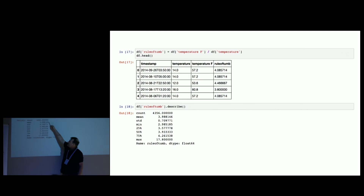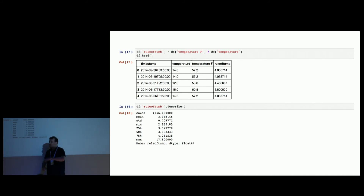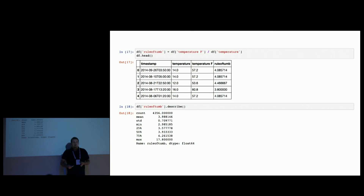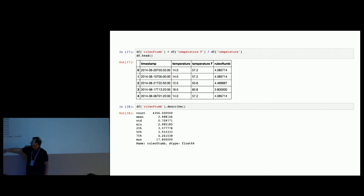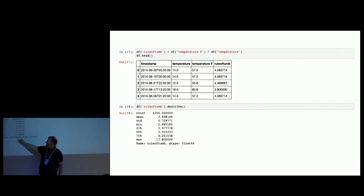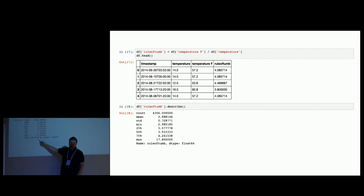To get a statistical impression of how good our rule of thumb might be, we can use the describe method, which is also built in. Just take the series and call describe. We get the count, mean, standard deviation — how dynamic is our dataset — minimum, maximum, and quartiles showing the distribution. The minimum value in our rule of thumb is about 2.9, but we see a maximum of 17, which is really off. So it's a bad rule of thumb.